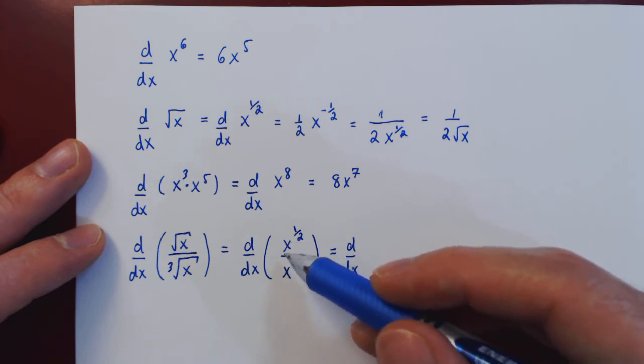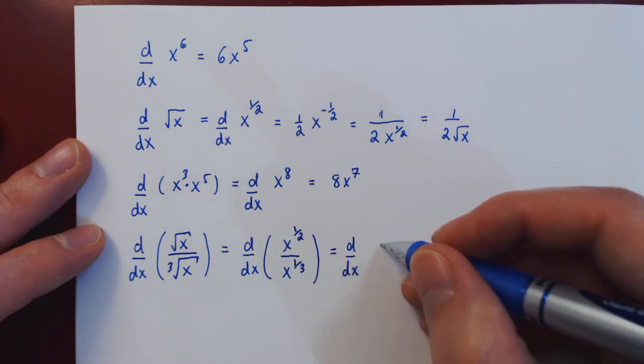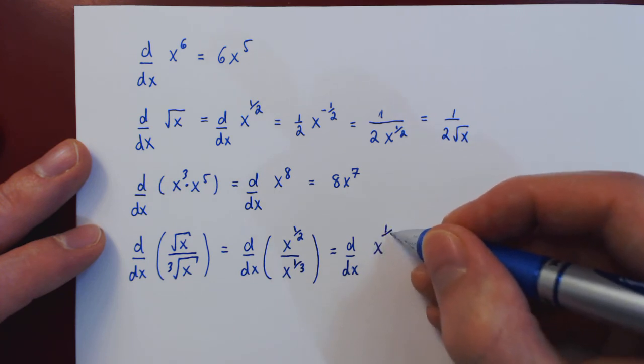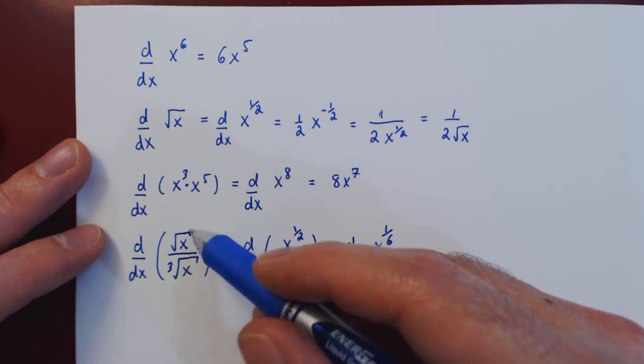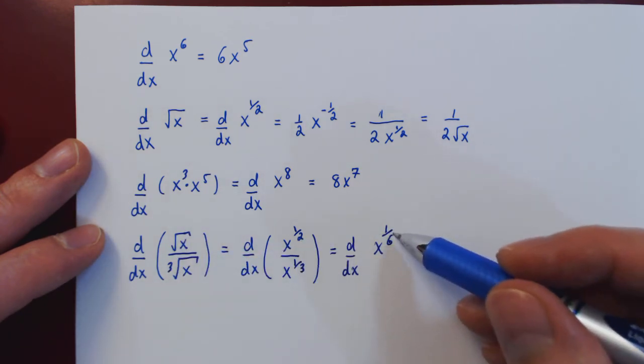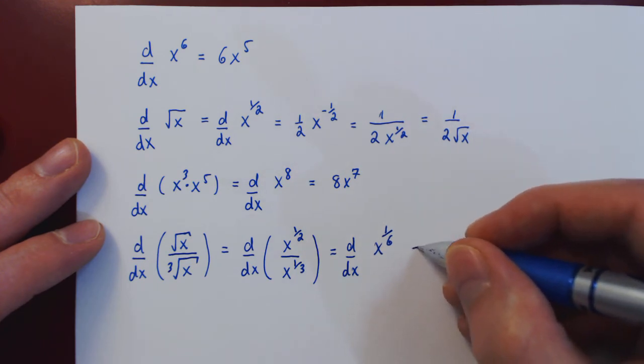So this will be on top, x to the 1 half minus 1 third, put everything over 6, this is 3 over 6 minus 2 over 6, therefore, 1 over 6. And now we have recovered, or transformed, the original function to a single constant power of x, and we can now differentiate with the power rule.